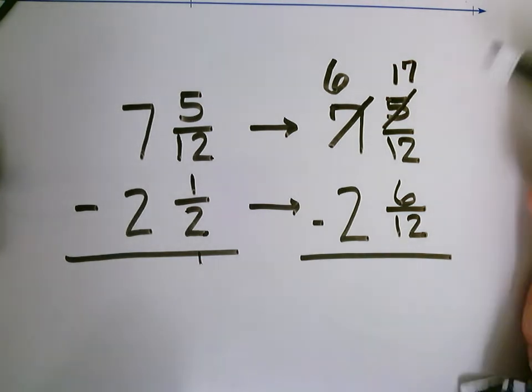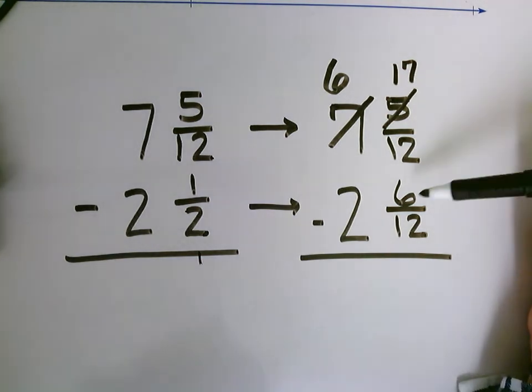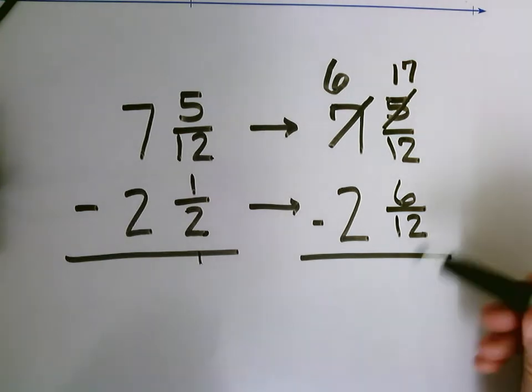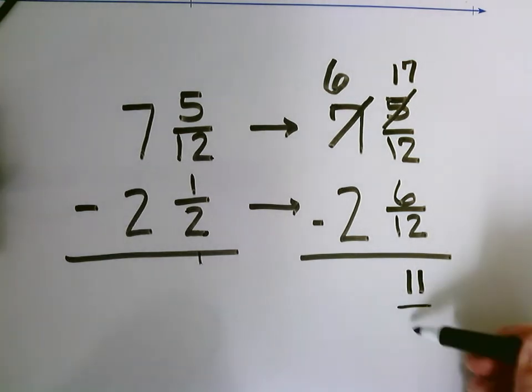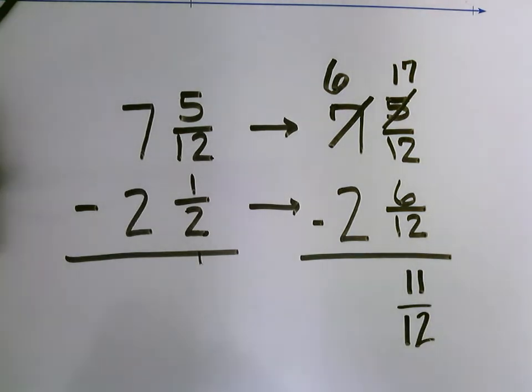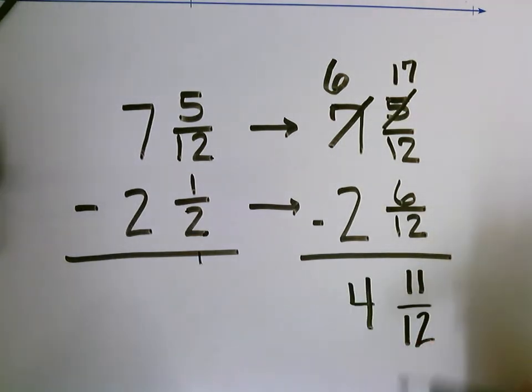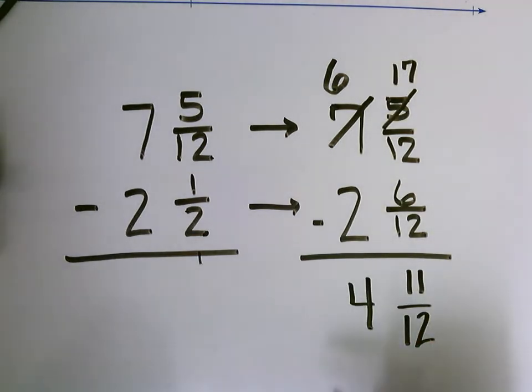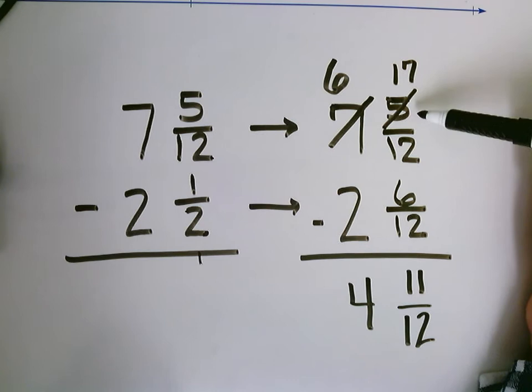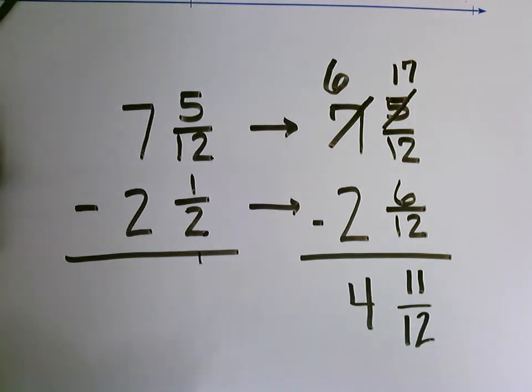So now I can subtract. 17 twelfths minus 6 twelfths is going to give me 11 twelfths, and 6 minus 2 is 4. So my answer, my difference, is 4 and 11 twelfths. I had to add 12 twelfths to my 5 twelfths, so I would have 17 twelfths in order to subtract. Let's try one more example.